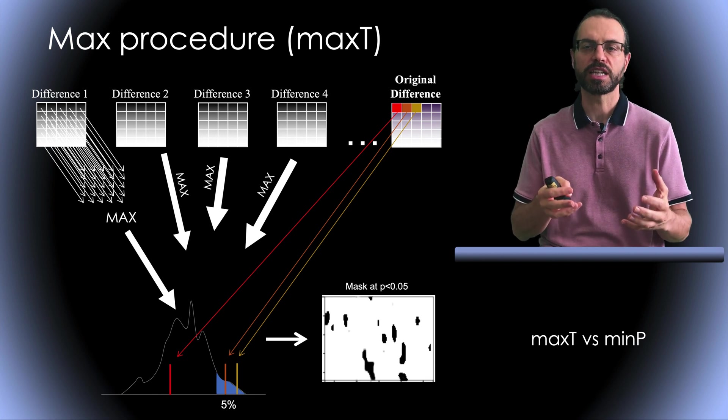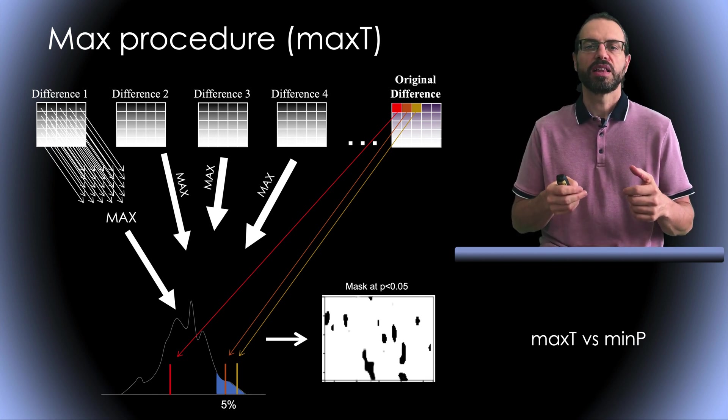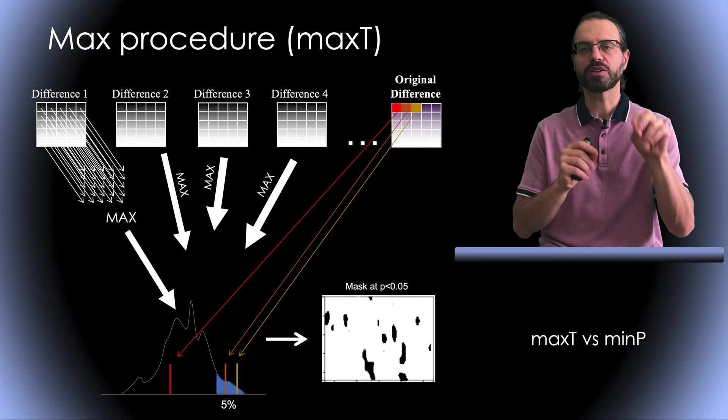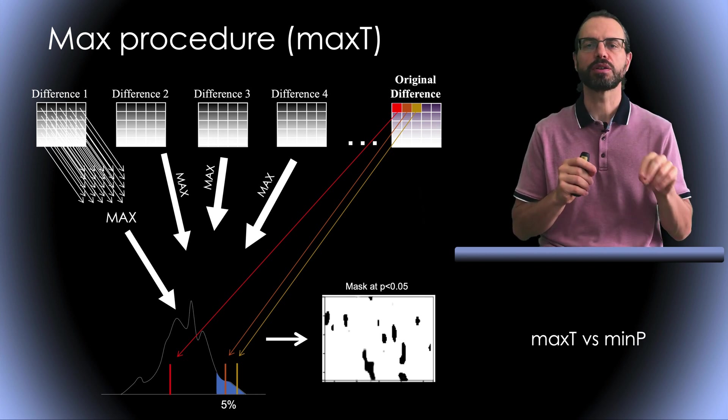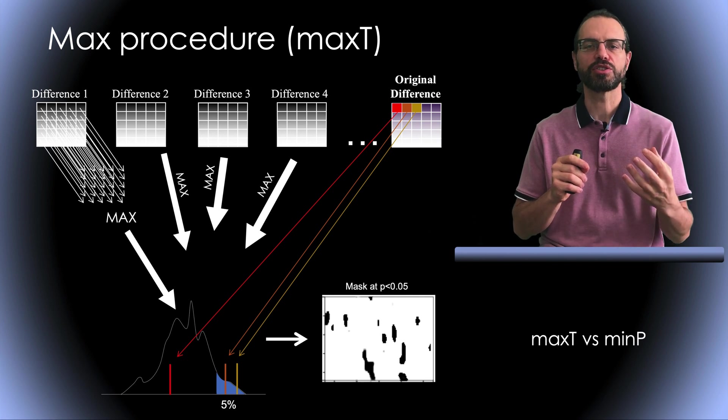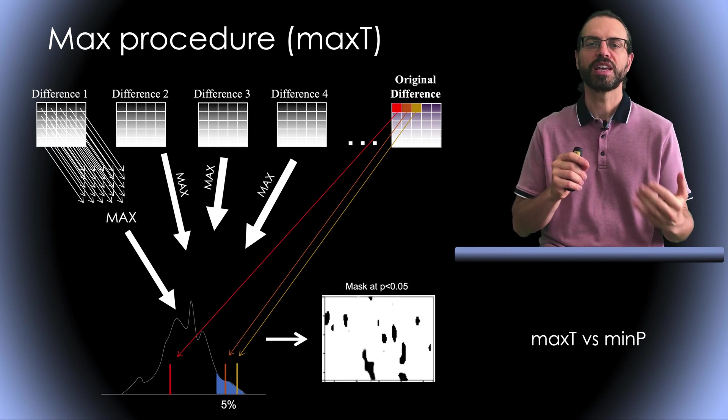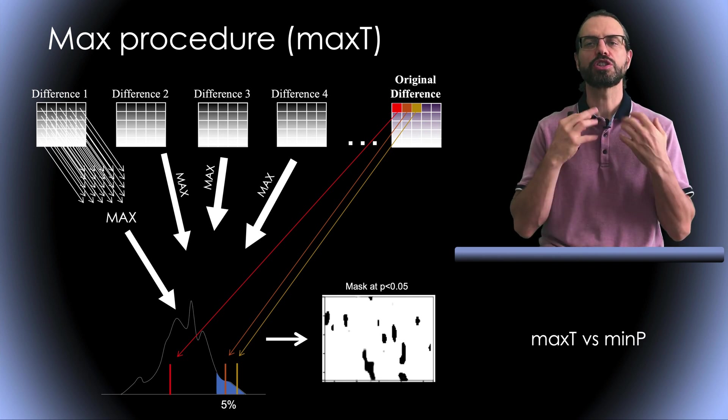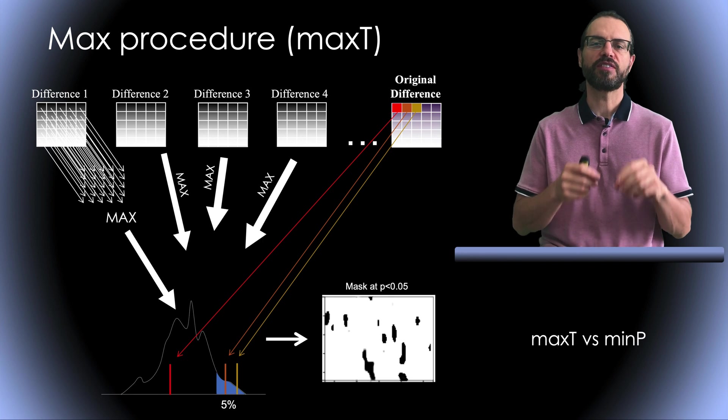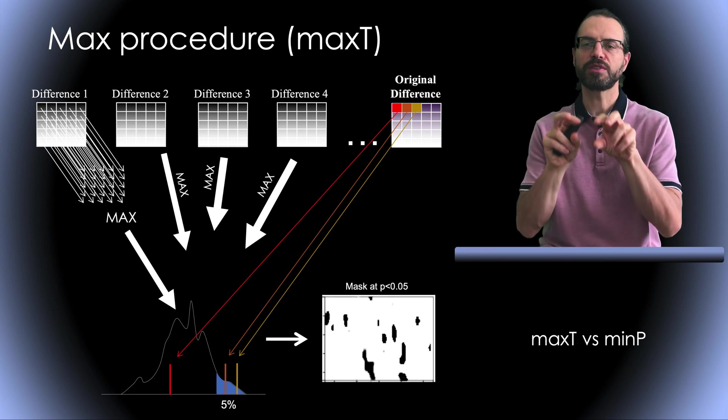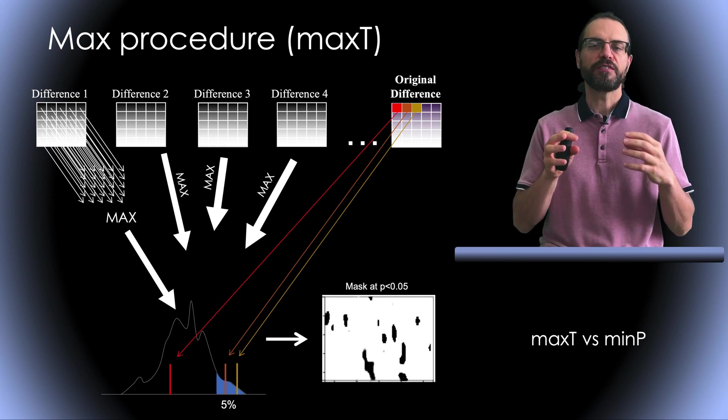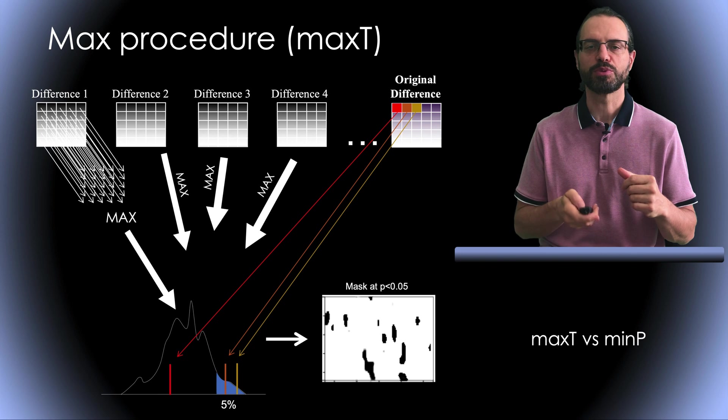Note that another related measure, called min p, consists of computing the parametric p-value for each pixel and taking the min across pixels. It's more computationally expensive because you have to calculate the p-value and it has slightly different properties. However, using both of these methods, there are issues with EEG. For example, if the distribution of values differ across time and frequency, this method might ignore some effects at some frequencies. We can fix this using methods we'll discuss next.